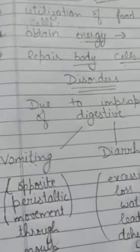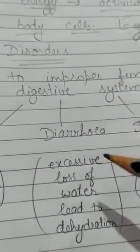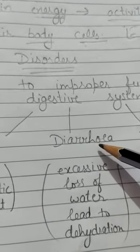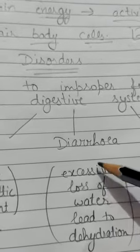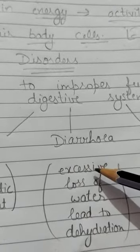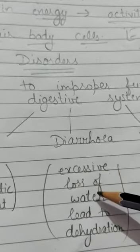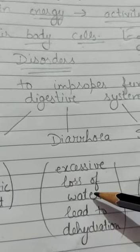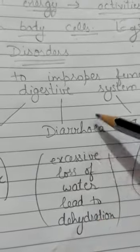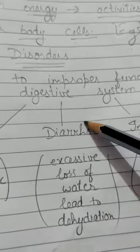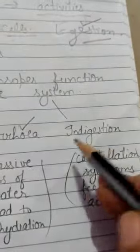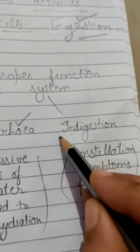The second disorder is diarrhea. Diarrhea means whenever we face some dehydration problems — there is excessive loss of water from the body, which also leads to dehydration. That problem is known as diarrhea.